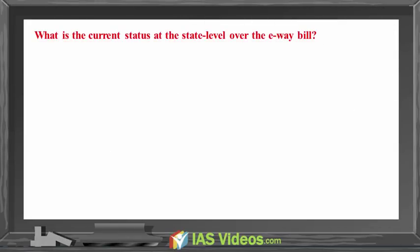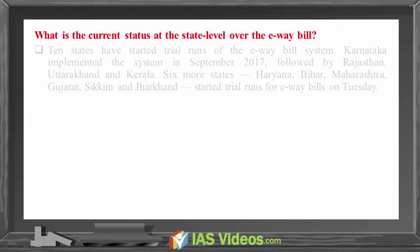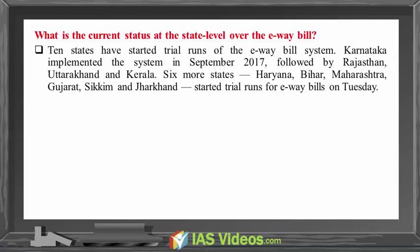What is the current status at the state level over the E-Way Bill? Ten states have started trial runs of the E-Way Bill system. Karnataka implemented the system in September 2017, followed by Rajasthan, Uttarakhand, and Kerala.